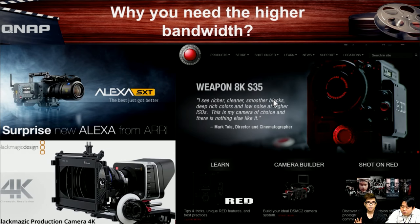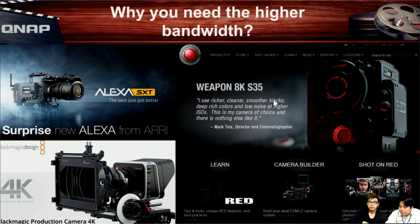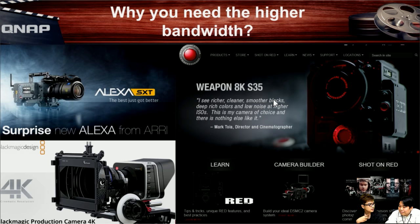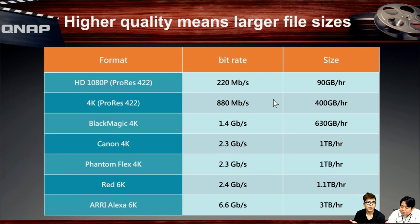Why do you need higher bandwidth? Because of 4K, 6K, and 8K footage. If you're a filmmaker or photographer, you'll know camera brands like ARRI, Blackmagic, and RED. With these high-resolution cameras, file sizes are enormous. Even iPhones can now shoot 4K video, and average smartphones can capture 1080p. At 1080p with ProRes encoding, one hour of video is around 100 gigabytes — meaning a 256GB Mac can hold less than three hours of 1080p ProRes footage.